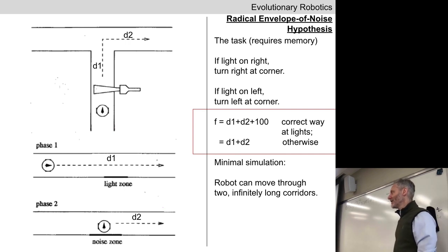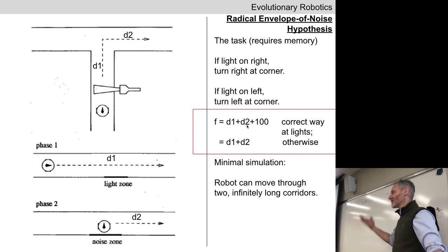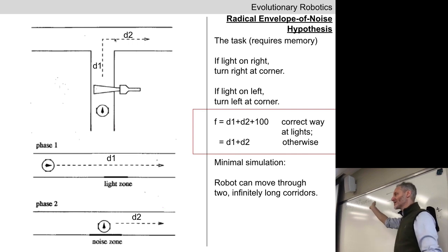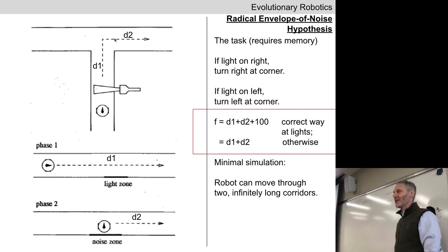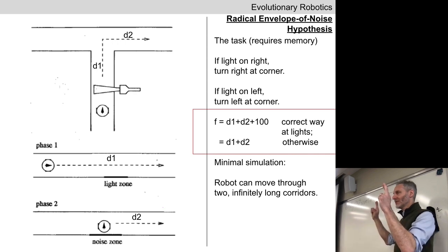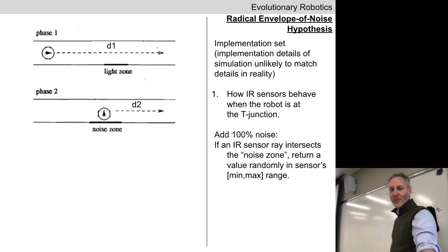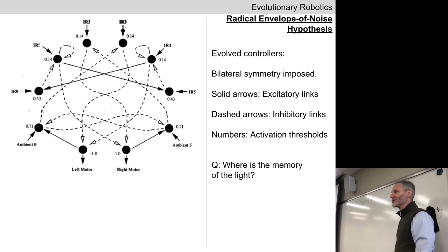They managed to evolve a controller that evolved the ability to always turn at the top of the T-maze in the direction in which it saw the light. So what did the investigators do? Cross fingers, hope for the best. We'll see the result in a moment.